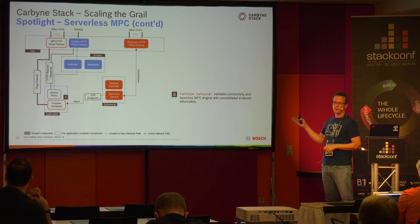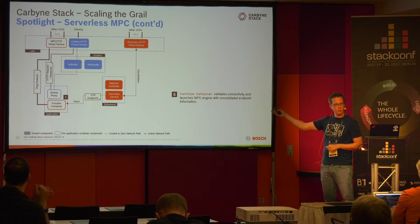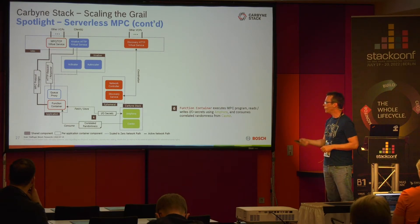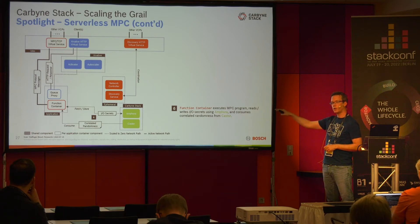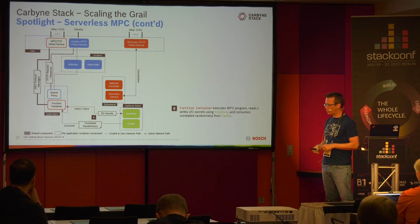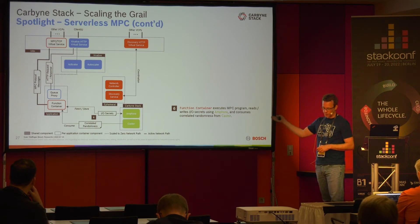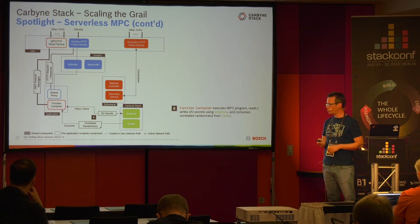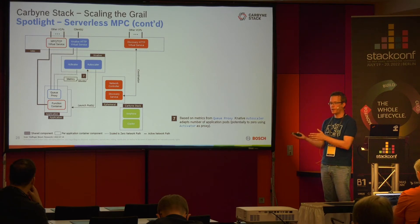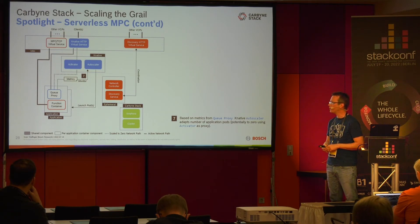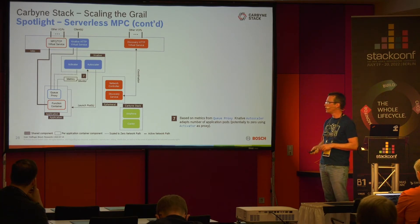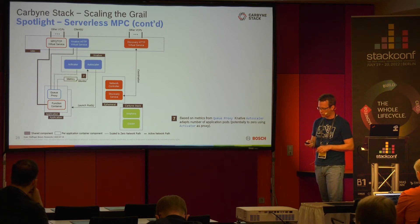The local function container registers itself using its endpoint on the discovery registry, which gets exposed to the others. The client then invokes the function via an incoming HTTP request, which is forwarded to the function container. It queries the registry for the other endpoints to start the MPC engines, then fetches data from our object store Amphora as input to the computation, performs the computation, stores results back into Amphora, and during this process consumes the correlated randomness from Castor. With KNative as the enabling framework, MPC workloads are scaled automatically as required by the current workload situation.